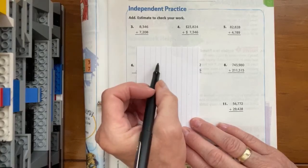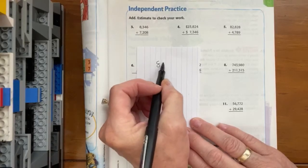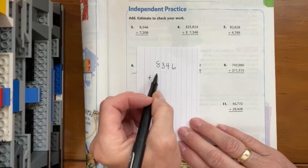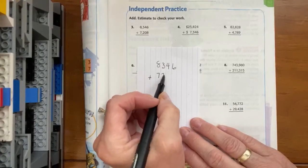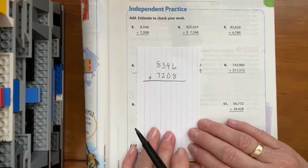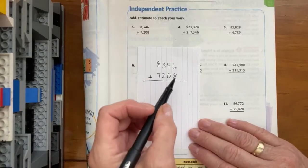So I'm going to write 8,346 plus 7,208. And you'll see that since I'm using these lines, I can stay nice and organized.